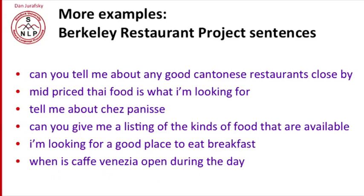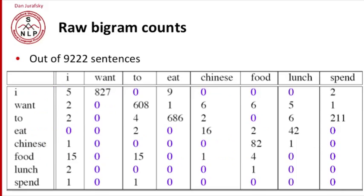Let's look at a larger corpus in order to get some more realistic counts. The corpus we're using here was collected from a dialogue system that answered questions about restaurants in the city of Berkeley, California. Here's the kind of sentences that were in this corpus. Now here's some sentences. Let's compute some n-grams based on these sentences.